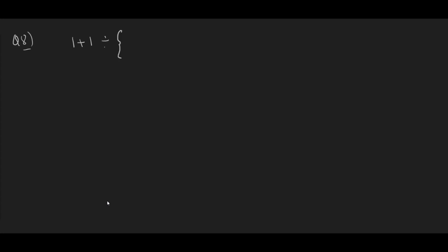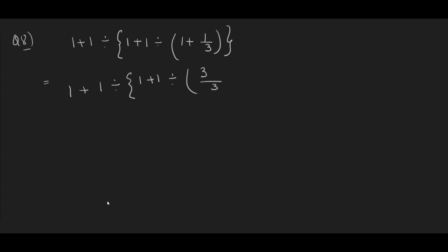Question number 8: 1 plus 1 divided by curly brackets containing 1 plus 1 divided by 1 plus 1/3 in brackets. Solve the innermost bracket first. LCM is 3, so 1 plus 1/3 gives 3/3 plus 1/3 equals 4/3.